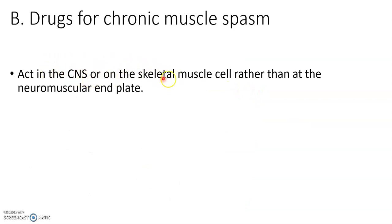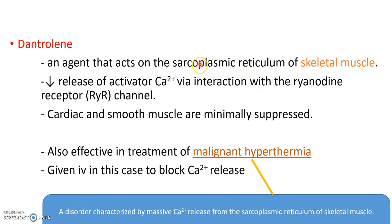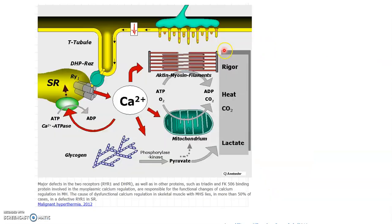These drugs act in the CNS or on the skeletal muscle cell. The next drug is dantrolene, which is an agent that acts on the sarcoplasmic reticulum of the skeletal muscle.